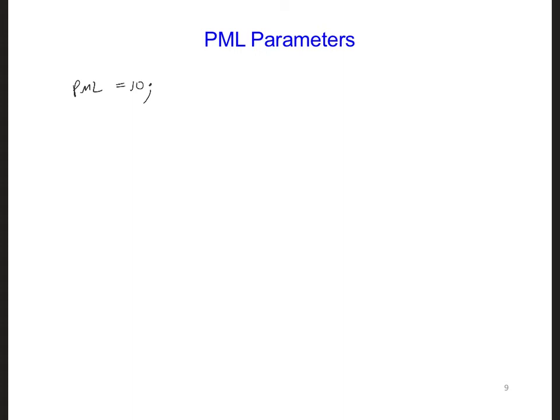And of course, technically, we saw earlier that our PML is actually 10 and a half cells thick, because of the exact number of field components we have the PML on. Also, we can store the order of the polynomial, which we can say m is equal to 3 for setting our sigma values.